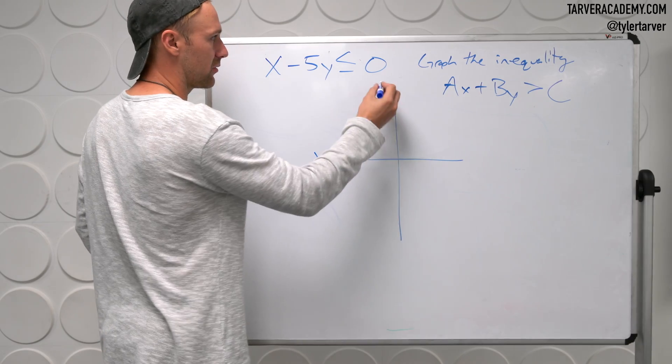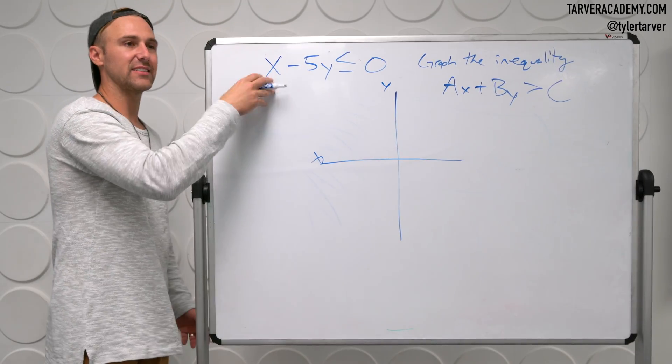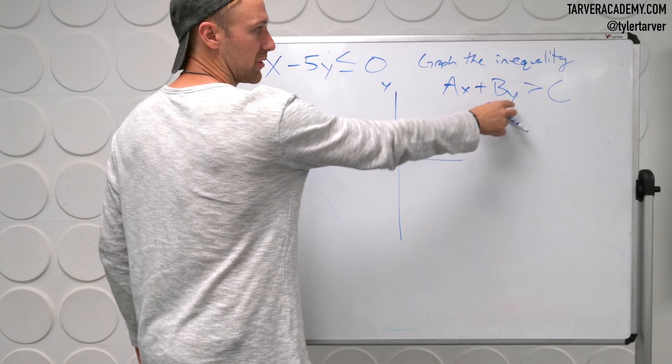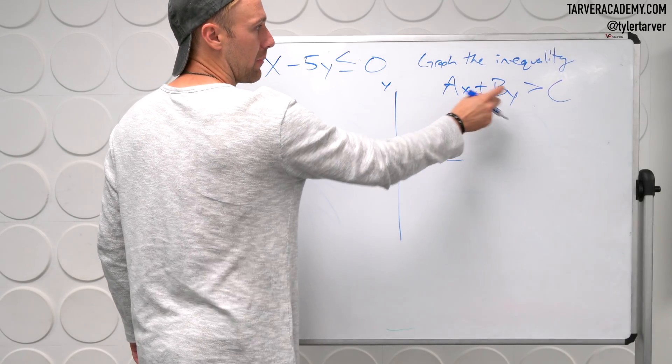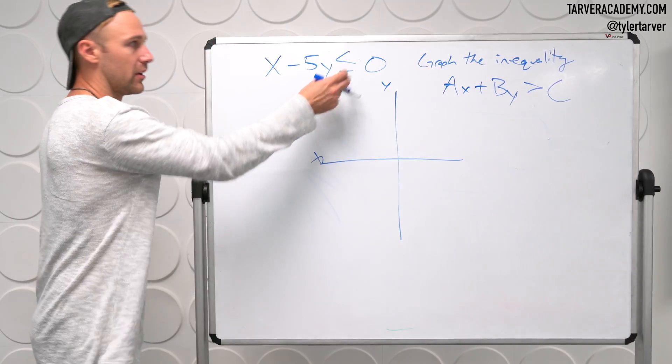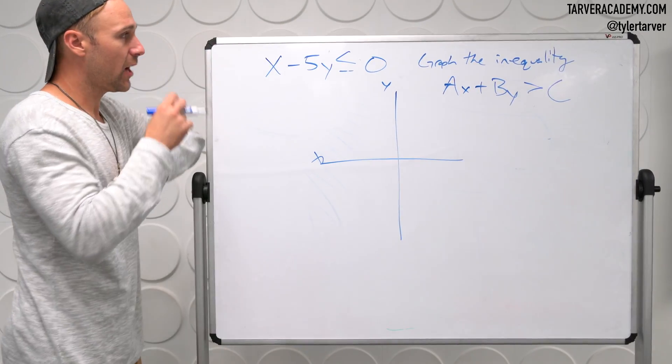Let's look at this. We've got our x-axis. We've got our y-axis. It's in what we would say is like standard form: Ax plus By plus or minus is greater than C, whatever. You've got number x, number y, C on the other side. Here we go.